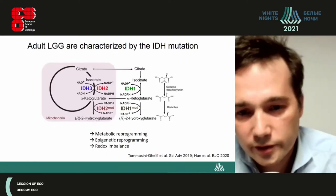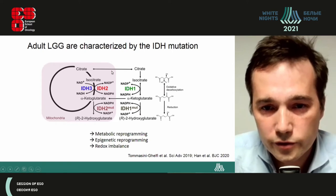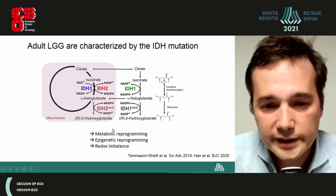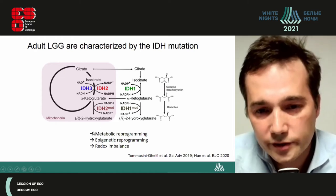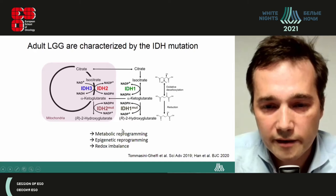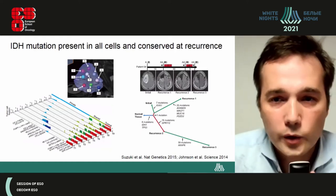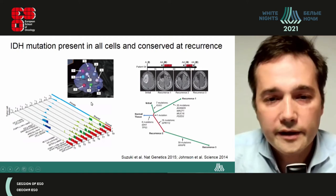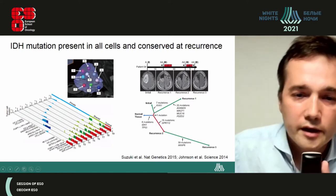The IDH mutation characterizes true low-grade gliomas. IDH mutation results in the production of 2-hydroxyglutarate, which results in multiple different consequences: metabolic reprogramming, epigenetic reprogramming, and redox imbalance. The presence of this mutation makes it a very attractive target because this mutation, when present, is present in all tumour cells — we know this from genomic analysis performed in different parts of the tumour.